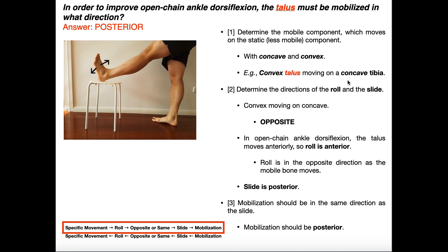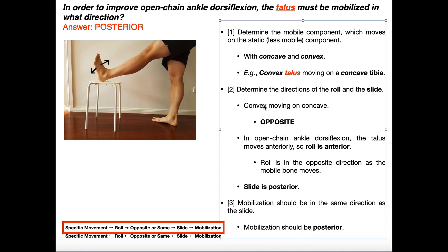From this, we can determine if the roll and the slide are in opposite or same directions using convex-concave rules. If something convex is moving on something concave, the roll and the slide are in opposite directions. If it were concave moving on convex, roll and slide would be in the same direction. A helpful mnemonic: if you see your X coming — convex first — you go the opposite direction. So a convex talus moving on a concave tibia means roll and slide are in opposite directions.